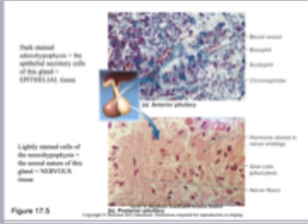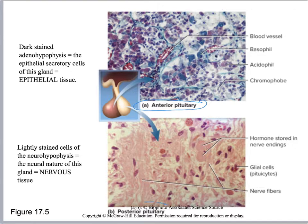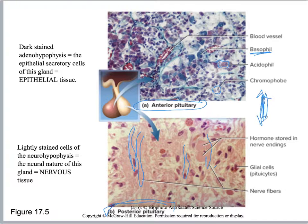Here the two tissue types are blown up so you can see them more clearly. You can see the stain being picked up by the anterior pituitary, and the neural cells of the posterior are more visible. Don't get confused by basophils, which are just white blood cells. You only need to be able to distinguish anterior pituitary from posterior pituitary — I'm not asking you to label all structures.